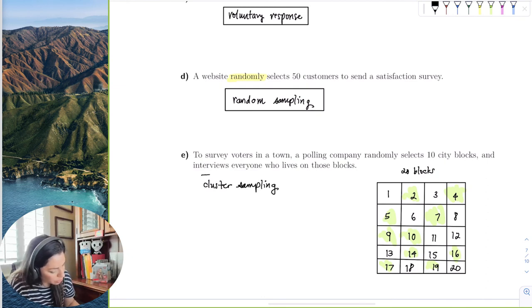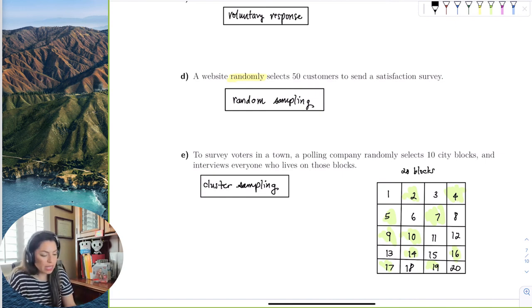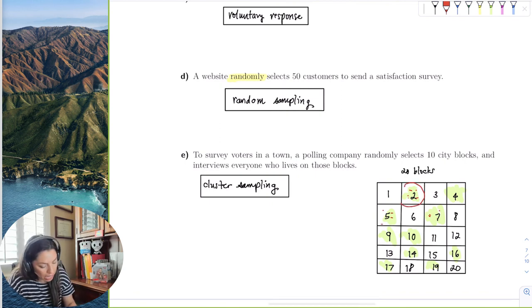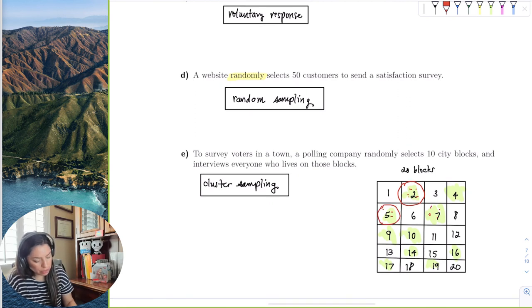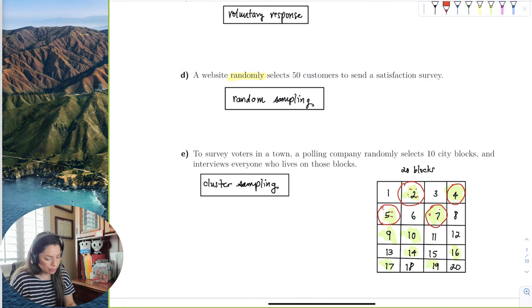It would have been stratified if I took subjects randomly out of each of these clusters. But because I took the entire city block to survey, it becomes a cluster sampling. The moment you start picking randomly out of each randomly block, then it becomes a stratified.